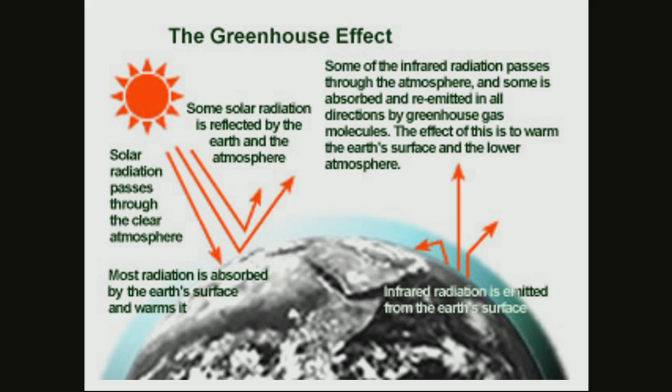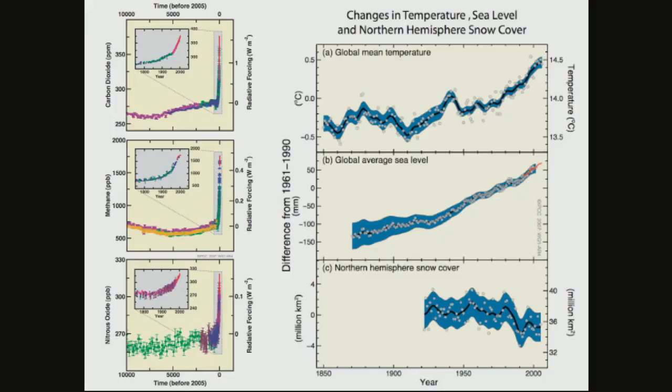And if there's more energy stored in a body, then it's warmer, by definition. Models show that without an atmosphere, planet Earth would be about 33 degrees Celsius cooler than it is now. The average temperature of the planet is about 15 degrees. Without an atmosphere, it would have been minus 18 on average, which is probably not very suitable for human life — any life for that matter. That's the natural greenhouse effect.